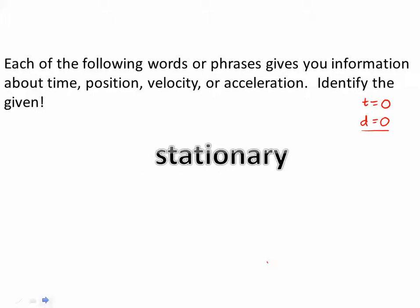Stationary. When something is stationary, that means that the velocity for that instant is zero. It's important to recognize that this is the instantaneous velocity. This doesn't tell you where it is, because it could be anywhere and stationary. Nor does it tell you if it's speeding up or slowing down. If it's stationary over a period of time, then the velocity is consistently zero, and therefore the acceleration is also zero.